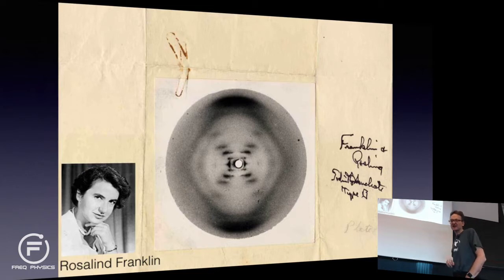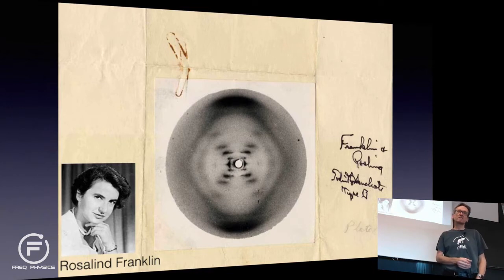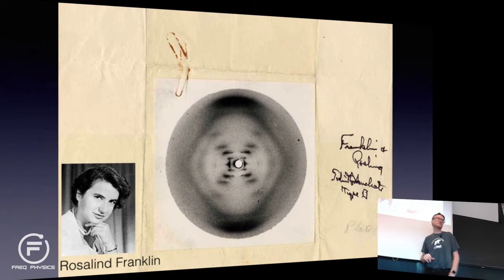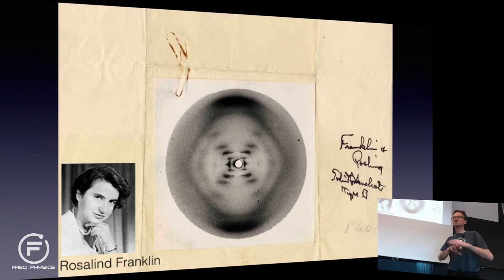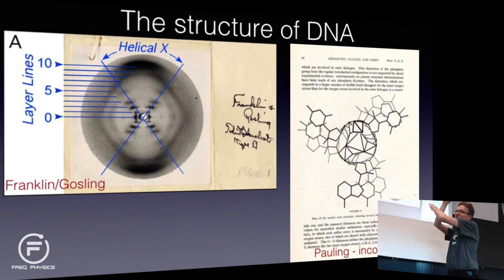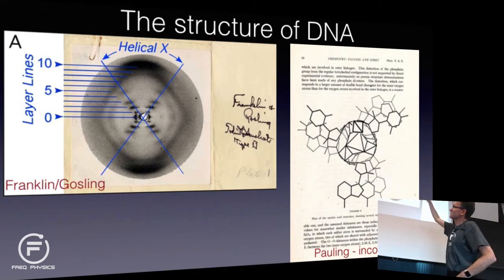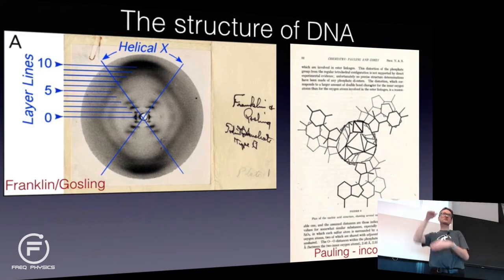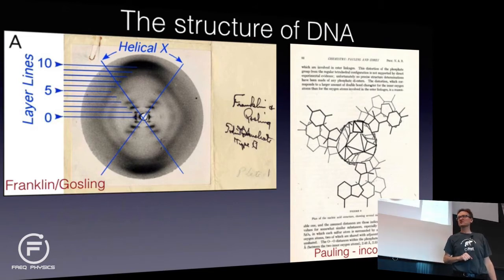What Rosalind Franklin and Gosling did involved an amazing amount of systematic work. You can see there appears to be some systematic difference between these bars, spaced roughly the same distance apart. If you do your physics properly, you can put length lines on the pattern and use those to derive that the cross-like shape corresponds to a helical structure, and the length lines tell you something about the length scale — some sort of repeat of a few angstroms or nanometers.